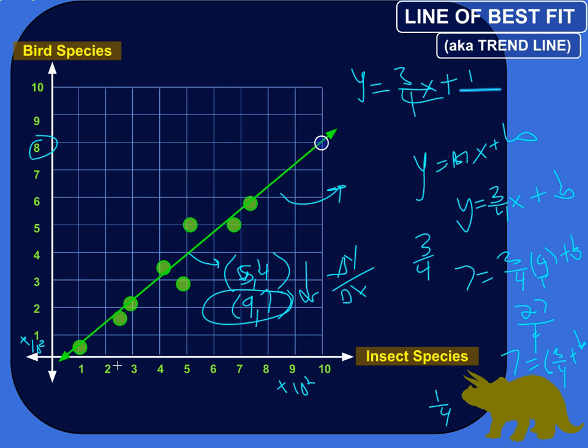And then what I could do is, if I wanted to find how many bird species I can expect to find, if I've got an island with a thousand insect species, I can just plug in 1,000 for x. And then see what I get out for y. So, that would be a way to do it.